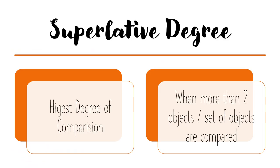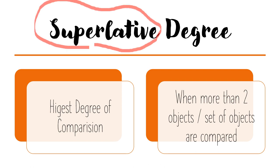The third category is superlative degree — the highest degree of comparison, when we compare more than two things or sets of things. When more than two objects or sets of objects are compared, we call it superlative degree. One more thing: most of the time we use the word the with the superlative form of adjectives.